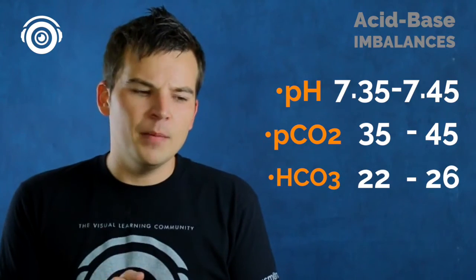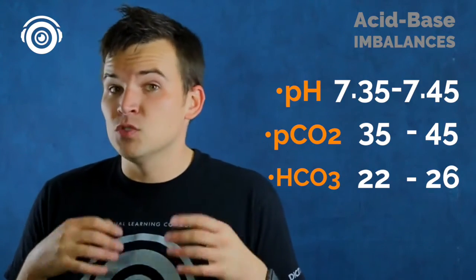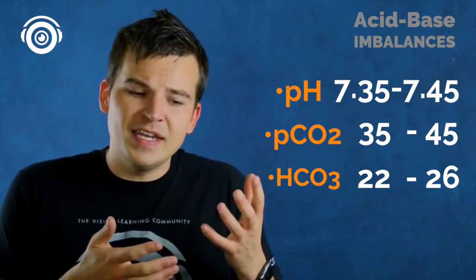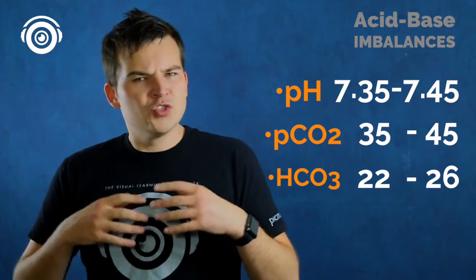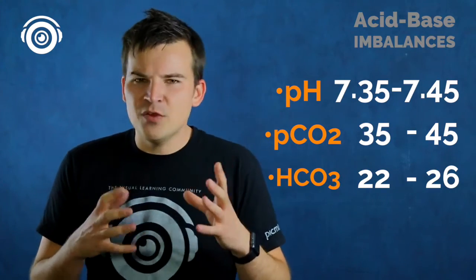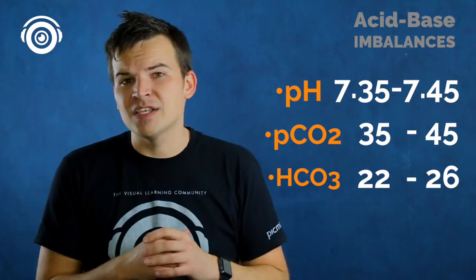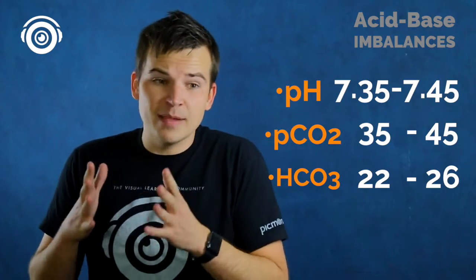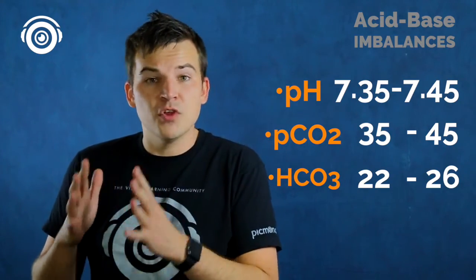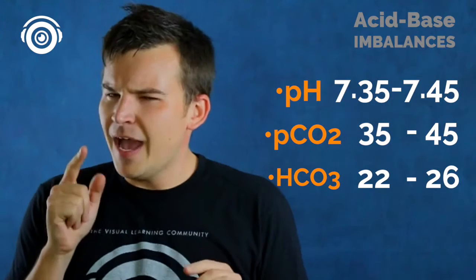Bicarb normal range is 22 to 26. Remember, bicarb is regulated by the kidneys and it's slow to react. You can get angry and huff and puff and blow very fast, but it takes a long time — sometimes 24 hours — for your kidneys to begin compensating.